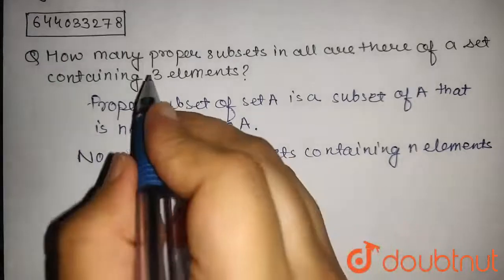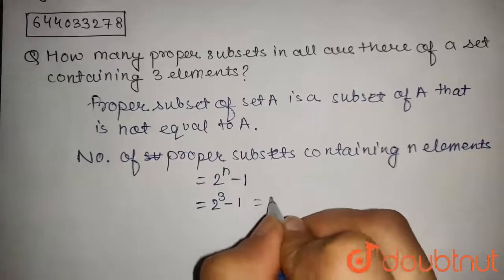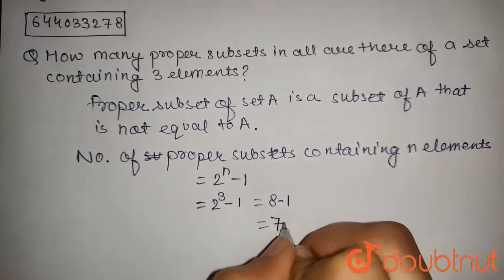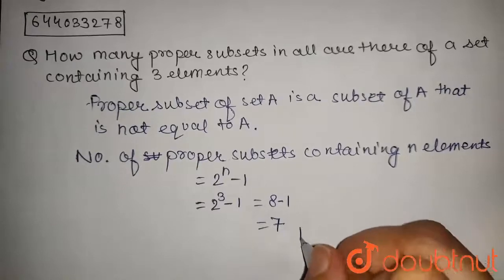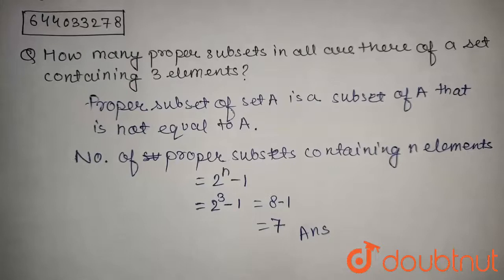We have n = 3. Putting 3 into the formula: 2^3 - 1 = 8 - 1 = 7. So the answer to this question is 7. The number of proper subsets containing three elements is 7.